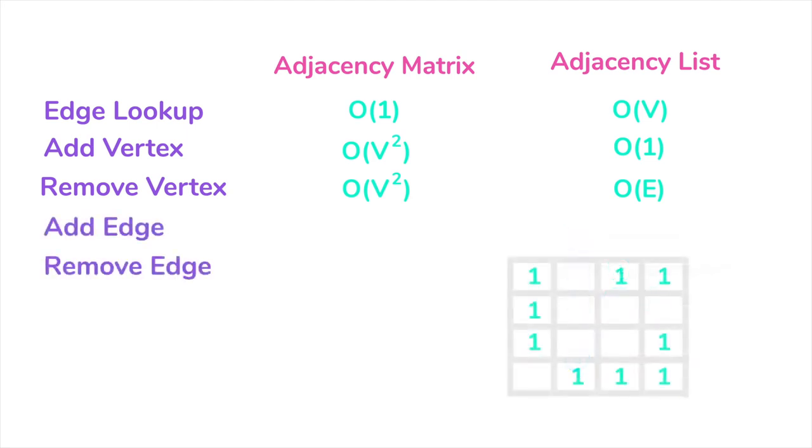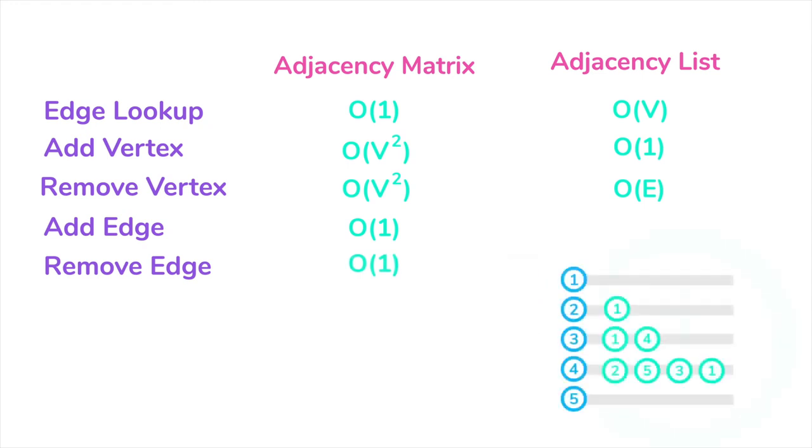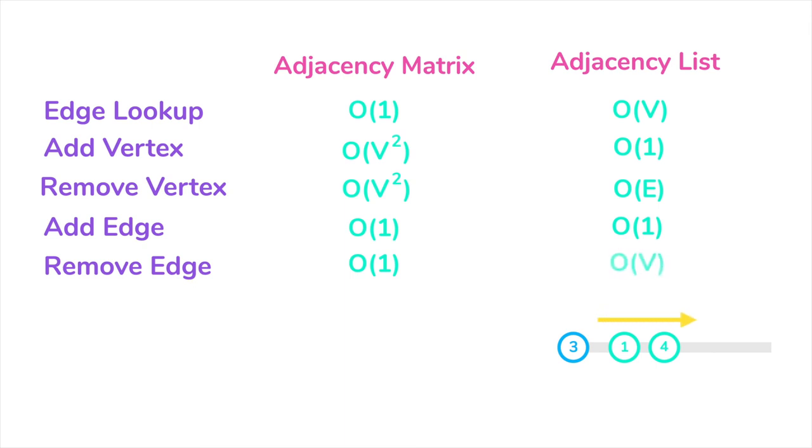Now what about adding or removing edges? An adjacency matrix can easily do this. Adding or removing a value in the matrix can be done in constant time. For the adjacency list, adding can be done in constant time. We just need to add an element to the list of neighbors. But when we want to remove an edge from the list, it needs to be O of V because we need to traverse to find the edge.